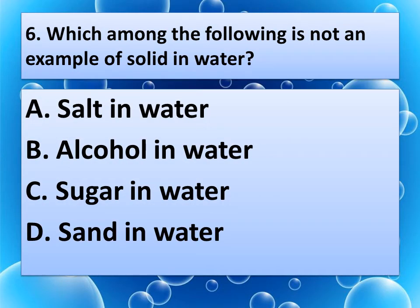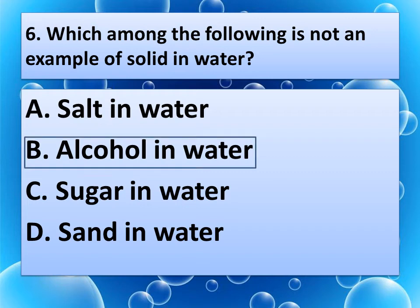Now next question is, which among the following is not an example of solid in water? Options are A. Salt in water, B. Alcohol in water, C. Sugar in water, D. Sand in water. Think about the correct answer. And the correct answer is B. Alcohol in water.